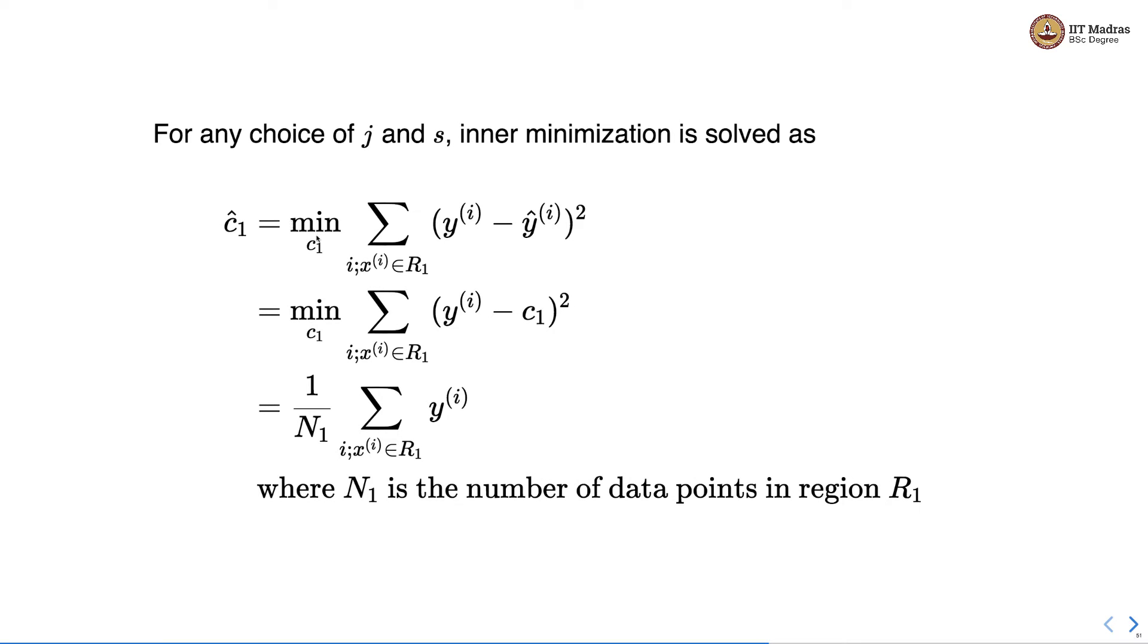To minimize over c1 the sum of squared error between the actual labels and the predicted labels, if we set c1 to 1 over n1 sum over all values of the labels you will get this particular minimum sum squared error.